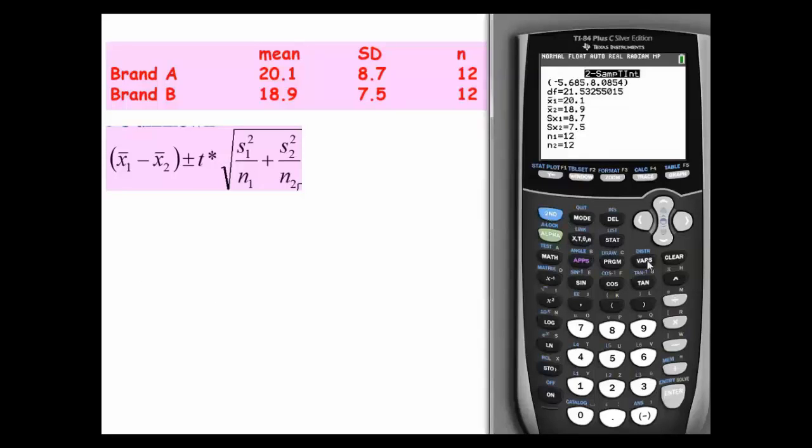So if we go to distributions and look for inverse T, inverse T they're going to ask us for area and degrees of freedom. So we want to think for a second, if we're looking at the middle 95%, that means you've got 5% for each of the tails.